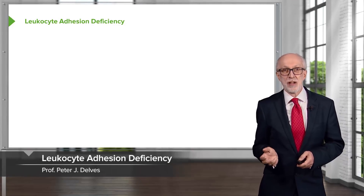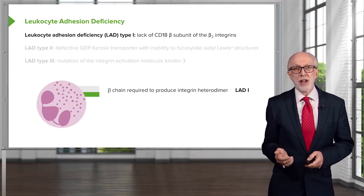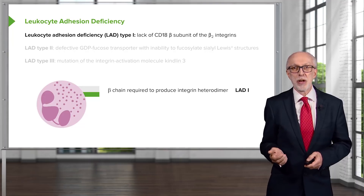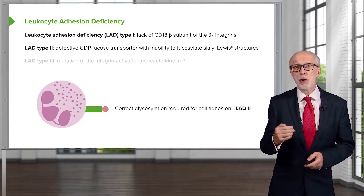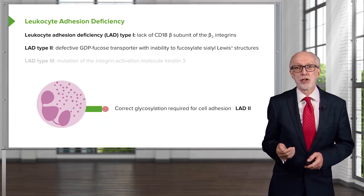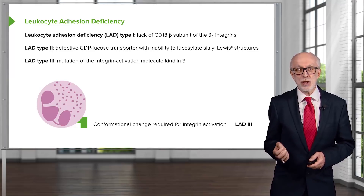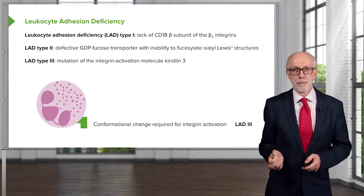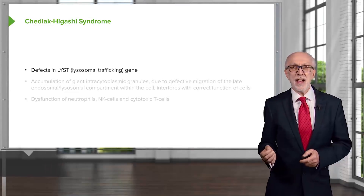Turning now to leukocyte adhesion deficiency — there are three types. LAD type 1 is due to a lack of the CD18 beta subunit of the beta-2 integrins. LAD type 2 is due to defective GDP fucose transporter and therefore an inability to fucosylate Sialyl Lewis X structures. LAD type 3 is due to a mutation in the integrin activation molecule Kindlin-3. Any one of these three gene defects can, in different ways, lead to defective adhesion of leukocytes and compromise the ability to fight infection.